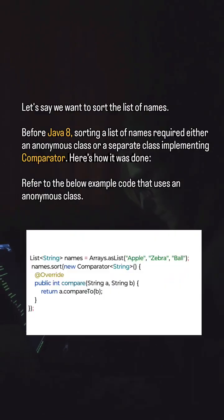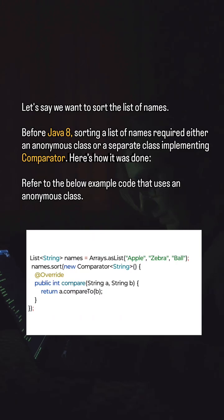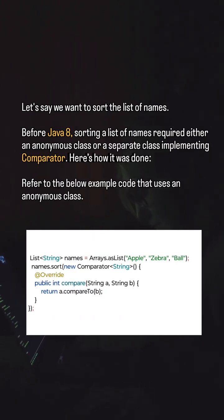Let's say we want to sort a list of names. Before Java 8, sorting a list of names required either an anonymous class or a separate class implementing Comparator.